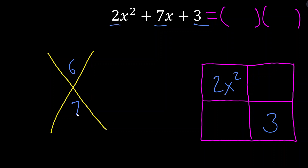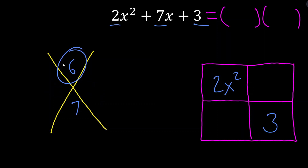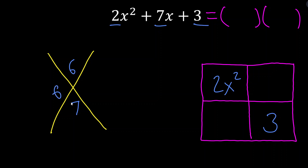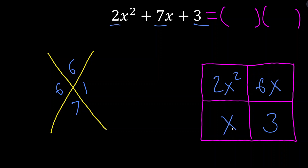What am I trying to do with these two side positions in the X? I need numbers that multiply together to equal a times c but add together to equal b. So we want numbers that multiply to 6 but add to equal 7. Six only has two pairs of factors: 6 and 1, and 3 and 2. Three plus 2 gives me 5; 6 plus 1 does give me 7 — so it's got to be 6 and 1. I place them in the box as coefficients of the x terms: 6x and x. It actually doesn't matter where we put them — it works either way.